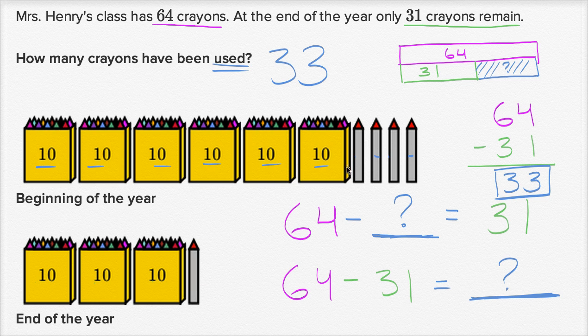So how many of the tens do we use up to go from what we started with to what we finished with? Well we end up using, let's see. There's only three tens here. There were six tens here. So we used one, two, three tens. So we used up three tens.